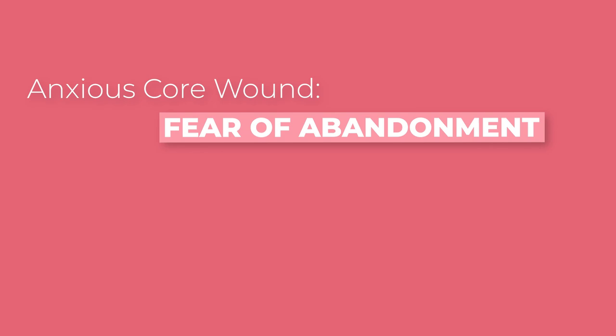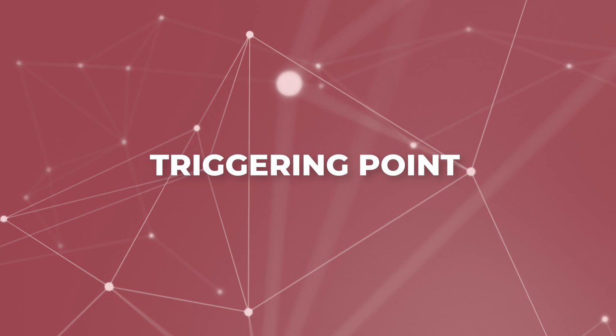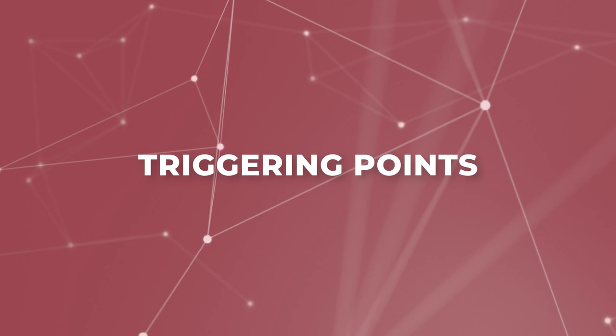What are the core wounds of the avoidant and anxious attachment styles? The anxious core wound is simply a fear of abandonment. The avoidant core wound, on the other hand, is a fear of losing their independence. So they both fear losing something — the anxious person fears losing a person, while the avoidant person fears losing a thing: their independence. These core wounds effectively serve as triggering points for both attachment styles, and they often get triggered when they enter into relationships with one another.